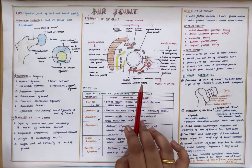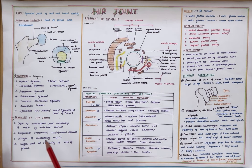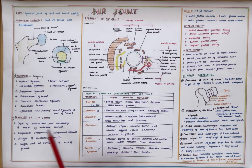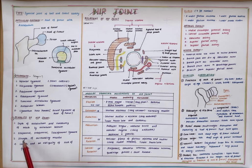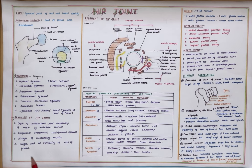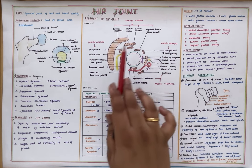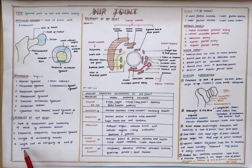The hip joint is a versatile joint and the stability of the hip joint is provided by the depth of the acetabulum and narrowing of the mouth by the acetabular labrum. Then we also have the iliofemoral, pubofemoral, and ischiofemoral ligaments which support the hip joint. Then the strength of the surrounding muscles, and the length and obliquity of the neck of the femur. These four factors stabilize the hip joint.